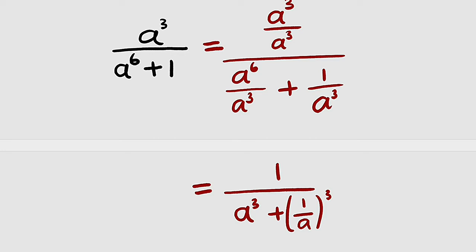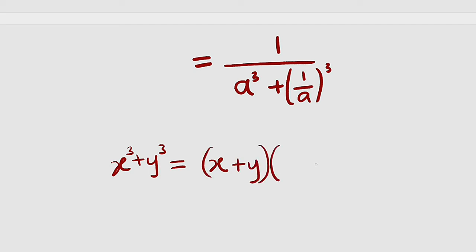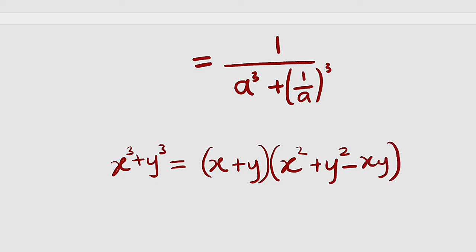The denominator is a sum of two cubes. Remember that x cubed plus y cubed equals x plus y, multiplied by x squared minus xy plus y squared. We are going to apply the same identity to evaluate our denominator.